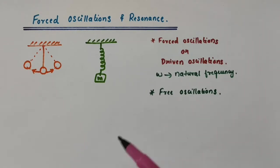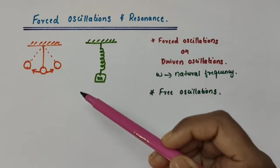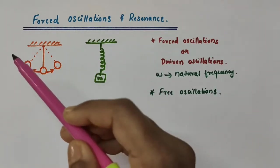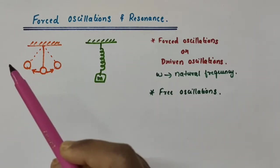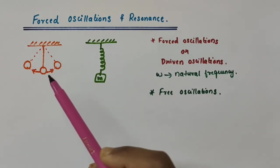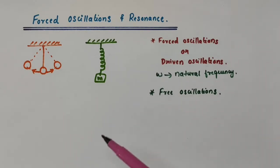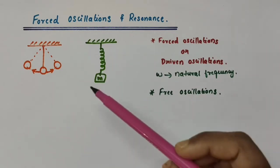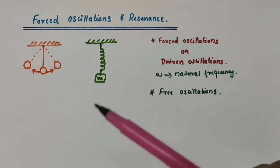We know that because of the damping forces present, these free oscillations die out eventually. The simple pendulum will oscillate with a greater amplitude at first, then its amplitude decreases and eventually it comes to rest. If you want to maintain these oscillations, we can keep these systems oscillating without dying out by using an external agency.